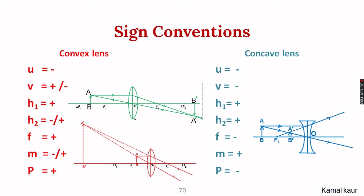For a concave lens, the nature of the image remains the same wherever we place the object. Therefore, u is negative as the object is on the left side. Image distance is also negative because the image is also on the left side. Height of the object is positive above the principal axis, and height of image is also positive since it is above the principal axis. Focal length is negative because the refracted ray diverges but appears to come from the left side. Magnification is positive because it is a virtual and erect image, and as focal length is negative, power will also be negative.